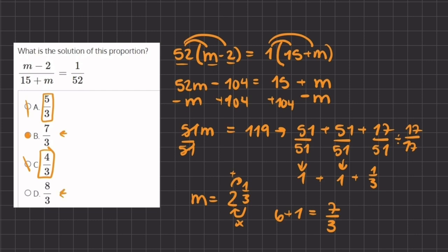You can take the values of B and D and plug them into the values of m to see which one gives you the value of 1 divided by 52. That's another way of solving this problem.